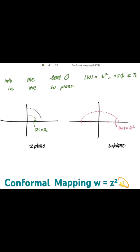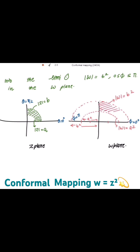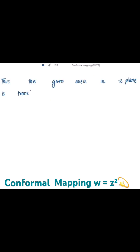For mod z equal to b, we are getting the image in the w plane as the semicircle mod w equal to b squared. Thus the region between these two circles is transformed into the region between these two semicircles — that is, the angular area between the two semicircles. So the given area in the z plane is transformed into the angular area between the two semicircles mod w.